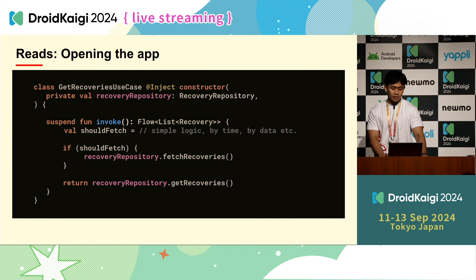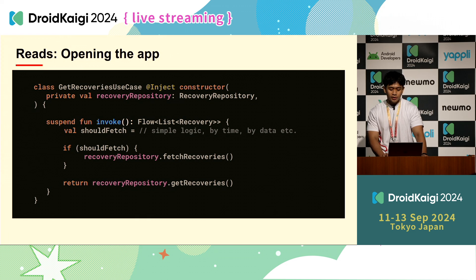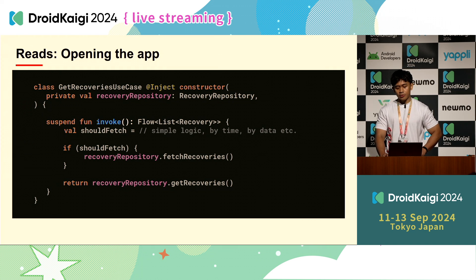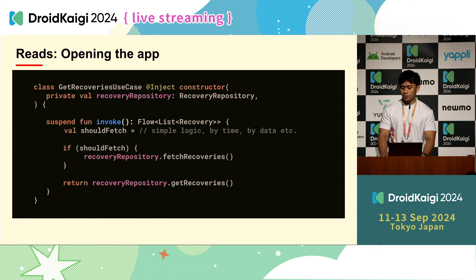In the use case, there is a shouldFetch variable. You can make your logic to decide if you should fetch the data — the logic can be by time, by data, or anything else depending on the requirement. If shouldFetch is true, the use case will call the repository to fetch. But in the end, we just return the data from the repository without even waiting for the fetch result.